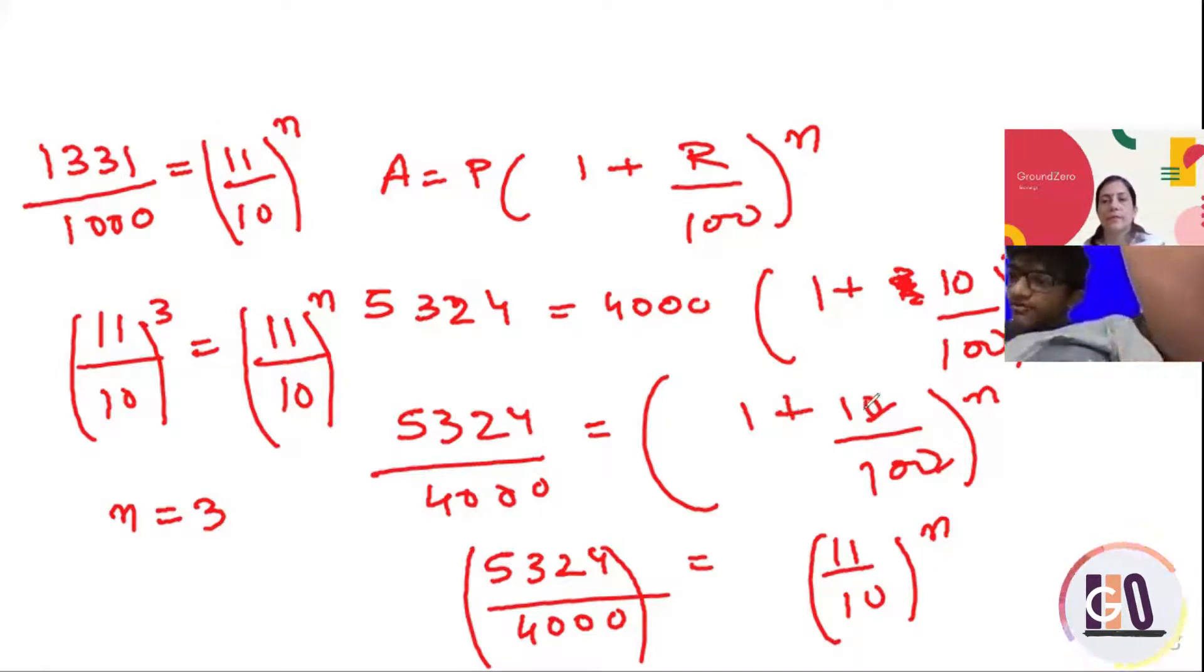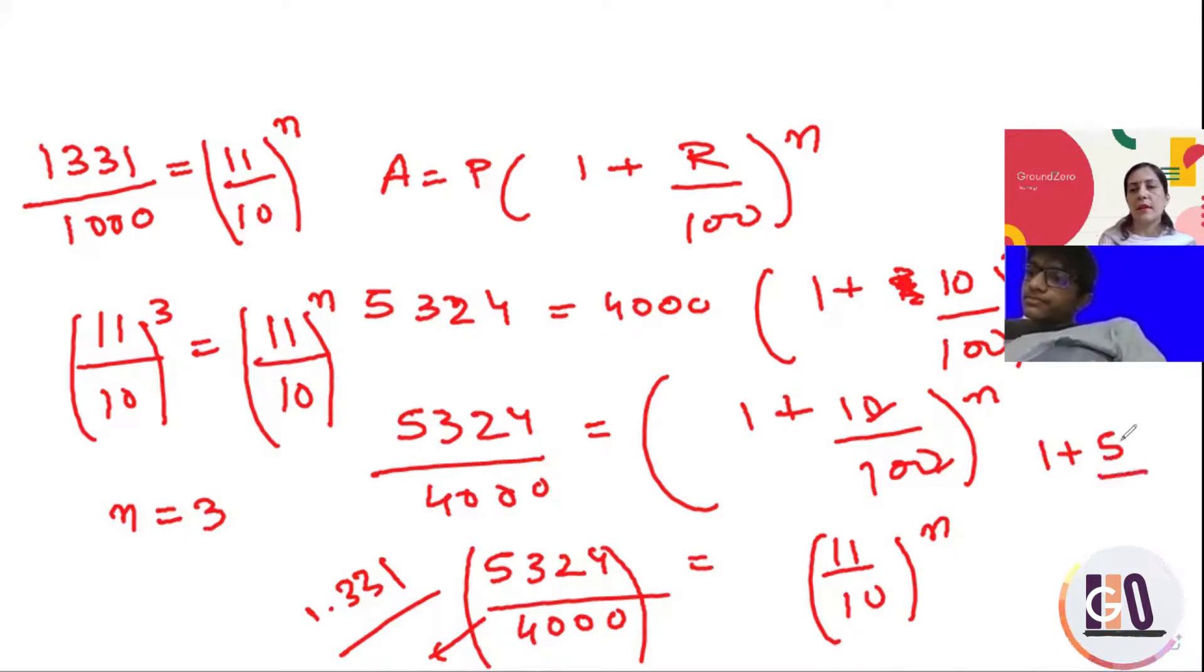So like it's 4000 times 1 plus 5 by 100 to the power x equal to 5,324, right? Okay. So if you divide 4000 on both sides, you get like 5,324 divided by 4000 is 1.331, right? Is equal to, okay, so this is 1.331 you got. Okay. Next. So 1.331 equal to 1 plus 5 by 100 is 1.05. So 1.331 equal to 5 by 100.